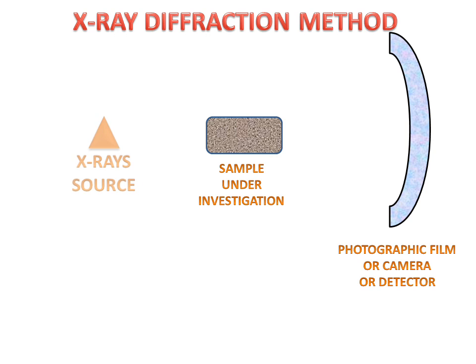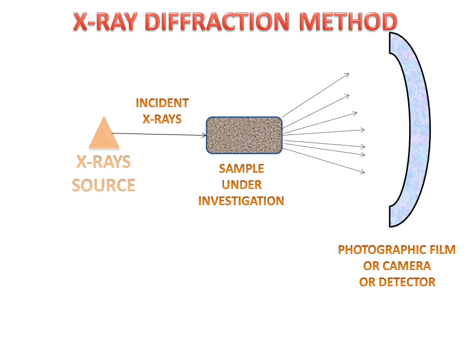The X-ray source gives the incident X-ray which strikes on the sample under investigation for crystal structure. When this ray strikes on the sample, the rays will be diffracted when coming out from the sample, and these diffractions are recorded on the photographic film, camera, or detector.